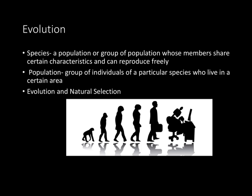A species is a population or a group of populations whose members share certain characteristics and can reproduce freely. A population is a group of individuals of a particular species who live in a certain area.